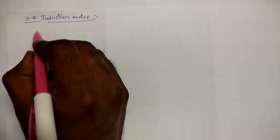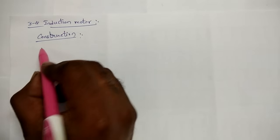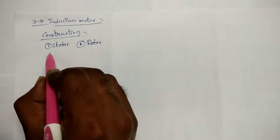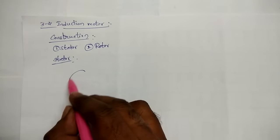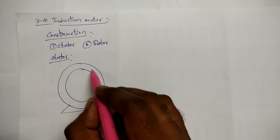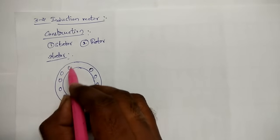This is the basic principle of the three-phase induction motor. Now let us see the construction. Generally, all electrical motors have two main parts: the first one is the stator and the second one is the rotor. The stator of a three-phase induction motor has a support to stand on the floor and has slots. In these slots, a three-phase winding is wound — copper wire is wound on the stator slots.